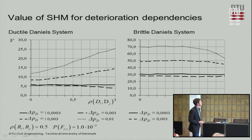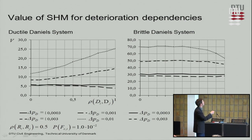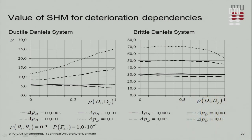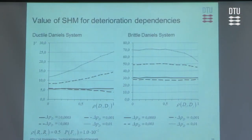Looking at the correlation of deterioration, we see a similar picture here and a similar picture to the previous one. The deterioration correlation only has influence when we have a rather high probability of failure threshold, because then the deterioration affects the system reliability.